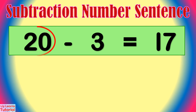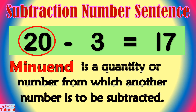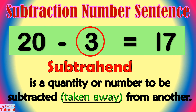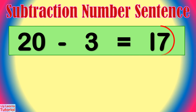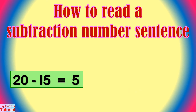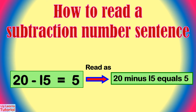This is the minuend. Minuend is the quantity or number from which another number is to be subtracted. Subtrahend is the quantity or number to be subtracted, taken away from another. The answer in subtraction is called difference. This is how we read a subtraction number sentence. In this example, we say 20 minus 15 equals 5.